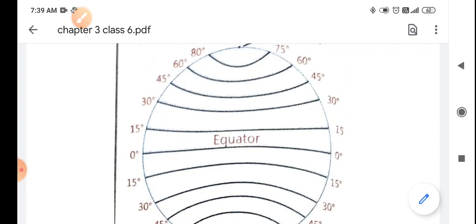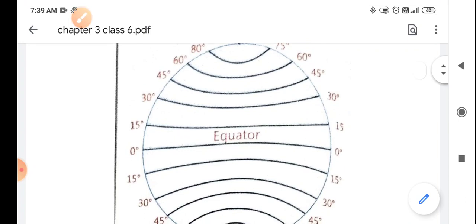I have told you that these are expressed in degrees. So you can see here 0 degree, then 15 degree, and 30 degree, 45 degree, 65 degree, 75 degree, 80 degree.